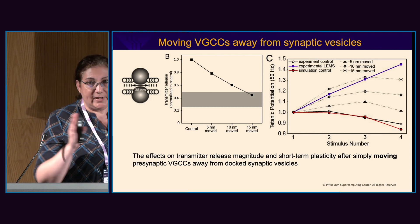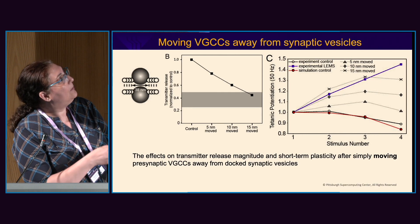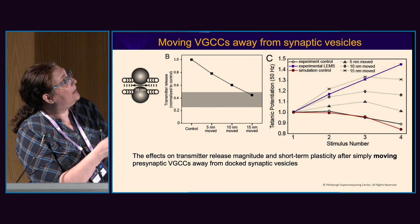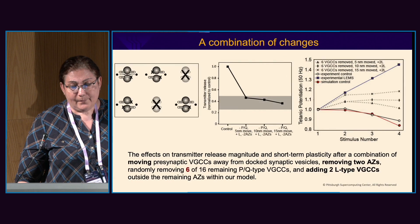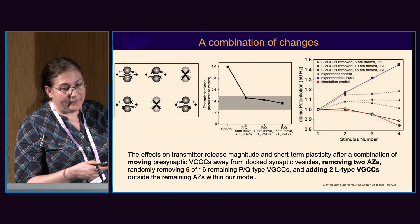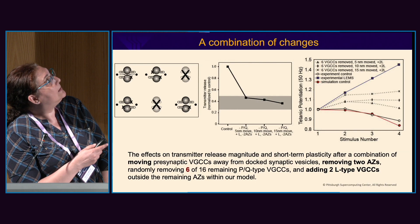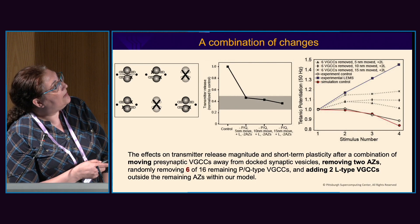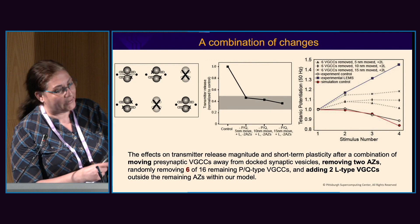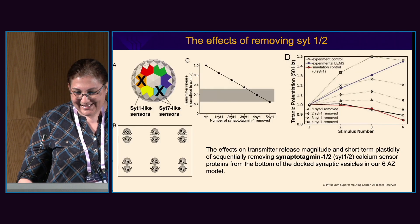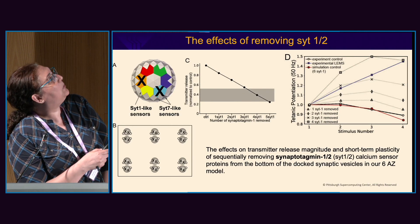We then moved the channels away from their original position, because we know that channel disruption also contributes to this problem. By moving channels away, we can recover a little bit of this facilitation. We also know that some active zones are actually lost in the system, so combining all of these effects — removing channels and losing active zones — we recover a little more of the facilitation, but still not enough. The probability of release is pretty close to the experiment, but the facilitation remains insufficient.